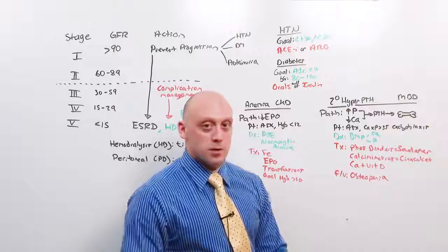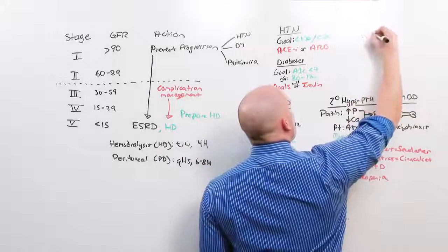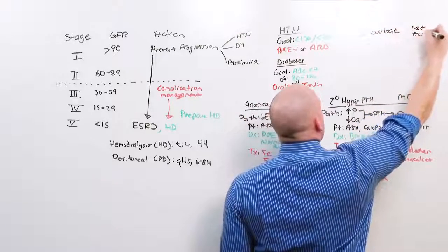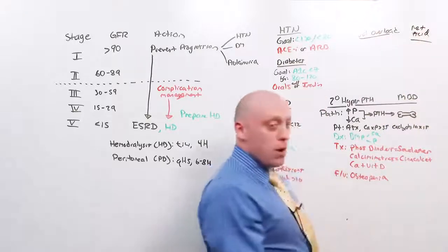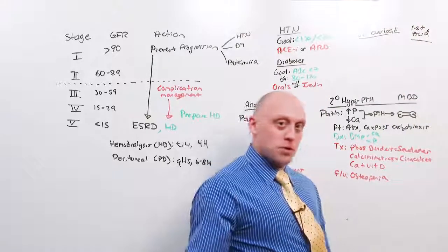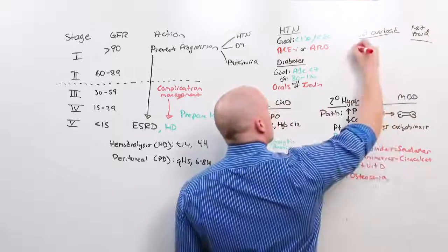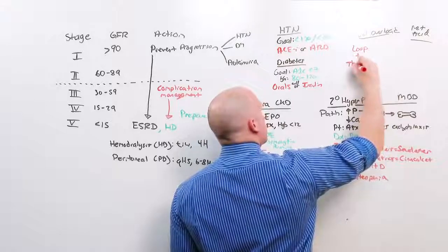That one was tough. Two ones we end on are simpler. It's volume overload and metabolic acidosis. Volume overload. You don't pee off the fluid you drink, you retain fluid. The way you manage this is with loop diuretics like furosemide, and you may add on thiazide diuretics.